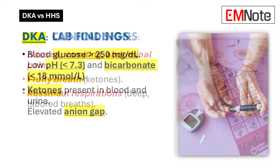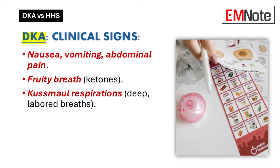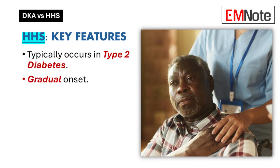Clinically, the hallmark signs of DKA include nausea, vomiting, and abdominal pain. There's also that telltale fruity breath from the ketones, and Kussmaul respirations — those deep, labored breaths that represent the body's attempt to compensate for the acidosis. So DKA presents pretty dramatically.